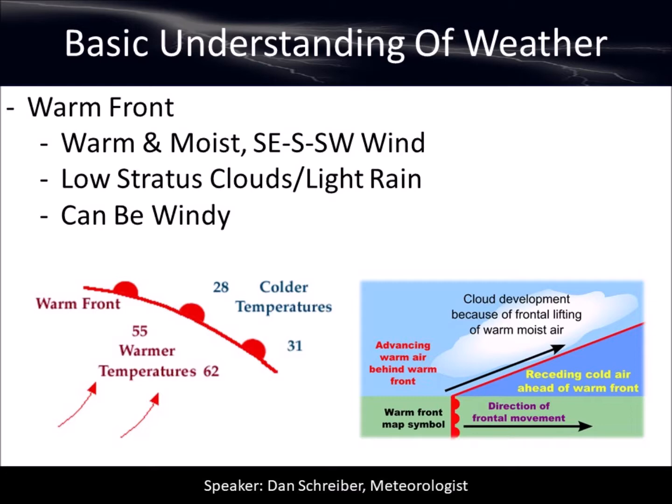A warm front is warm and moist air, generally coming from the southeast or the south — some sort of southerly direction in the northern hemisphere, especially here in the United States. Warm, muggy, moist air is driven by a warm front in most circumstances.